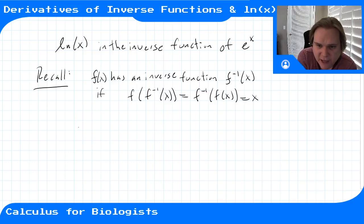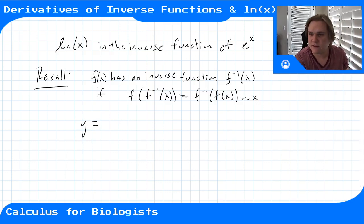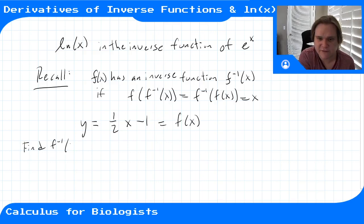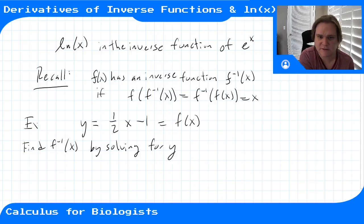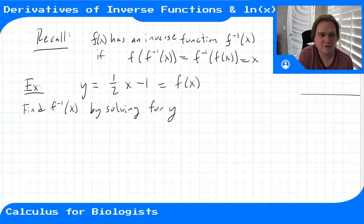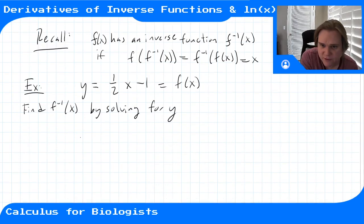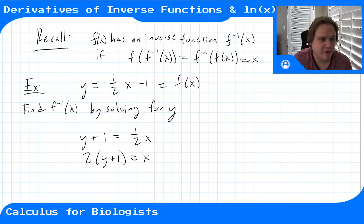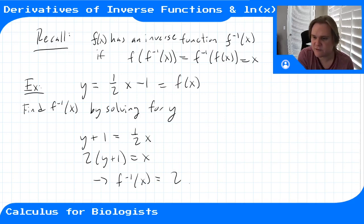So if we have a line, let's say y equals ½x minus 1 — this is our f of x — then we'd find f inverse of x by solving for y. If I solve this equation for y, we get y plus 1 equals ½x, and then 2y plus 1 is equal to x. This defines our inverse function — it's a function that gives us the input as a function of the output. So f inverse of x would be 2x plus 1.